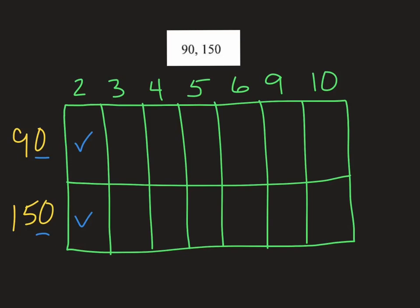For 3, if I add up these digits, this one would be 9, this one would be 6. So 3 could go into both of them. And you just keep working your way down the road, then you can see which ones they have in common.